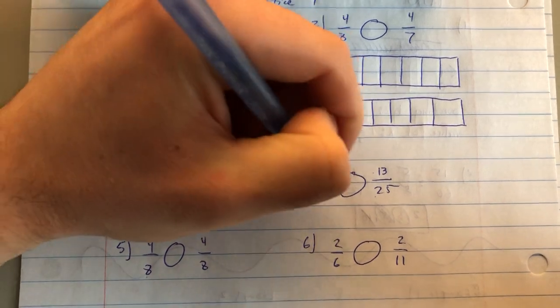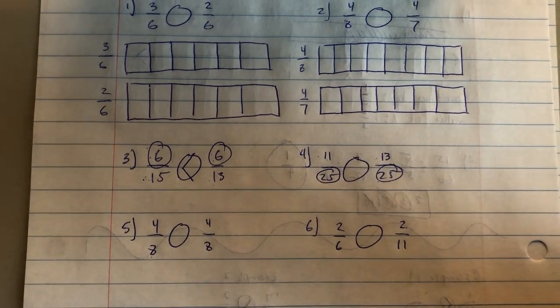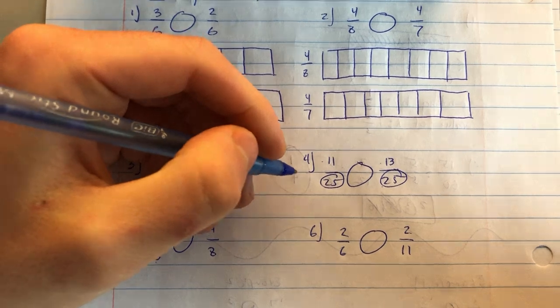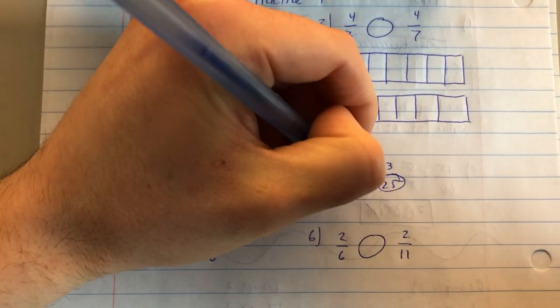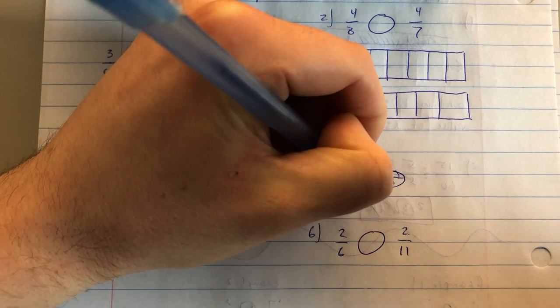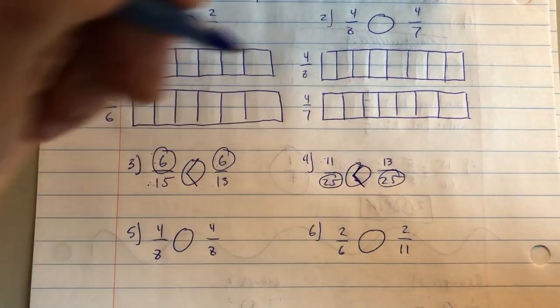I'm going to look over here at this fraction 11 twenty-fifths and 13 twenty-fifths. My denominators are the same, so the larger the numerator, the larger the fraction. So 11 is less than 13, so I could say that 11 twenty-fifths is less than 13 twenty-fifths.